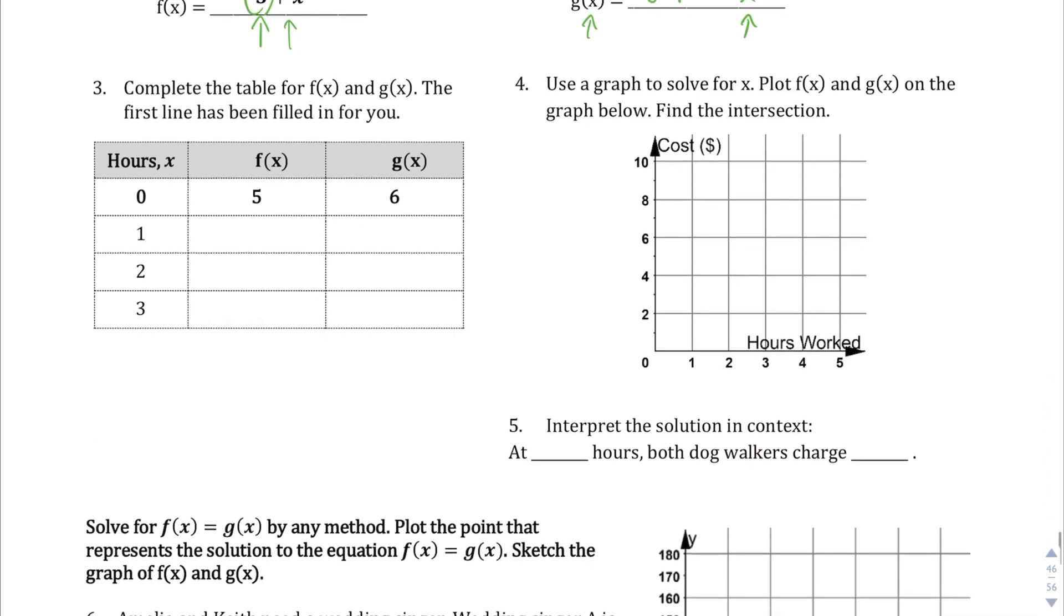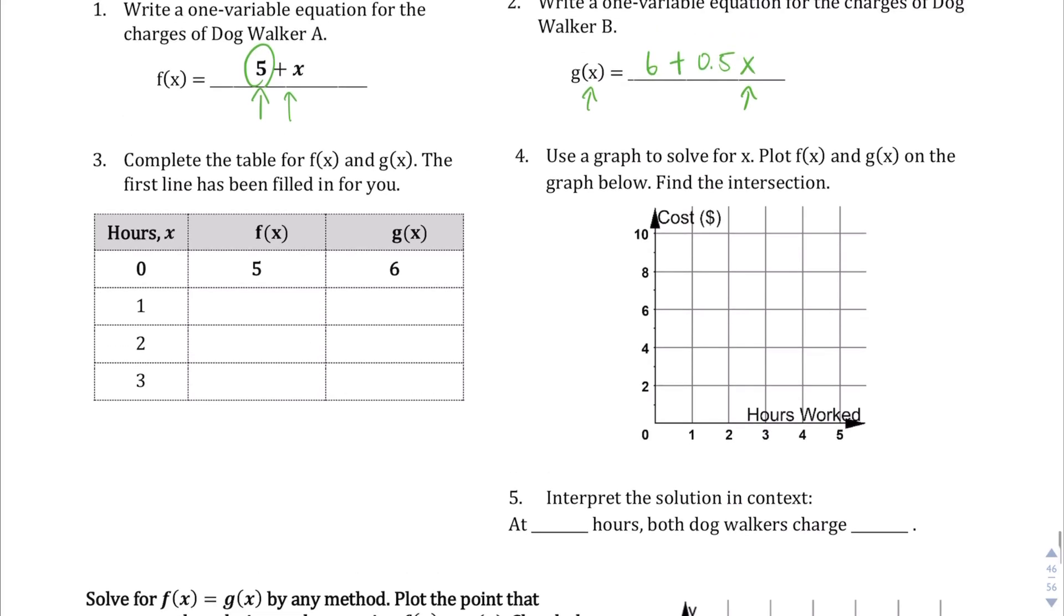Okay. Question number three, complete the table for f(x) and g(x), given those two equations. So at zero hours, you can kind of do these in your head. These are easy enough where you can do these in your head. If you plug in zero for x, five plus zero is five, therefore we get the five. And the same thing for the g(x). Zero times 0.5 is zero. Six plus zero is six, therefore we go with that six. So let's go ahead and fill in these values. If we plugged in one for x, five plus one is six. Plug in two, five plus two would be seven. If we plug in three, five plus three would be eight.